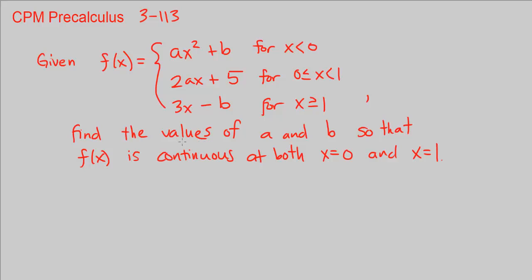Our goal is to find the values of a and b so that f of x is continuous at both x equals 0 and x equals 1. What's so interesting about these two points is that that's where the transition is happening from one piece to the other piece.